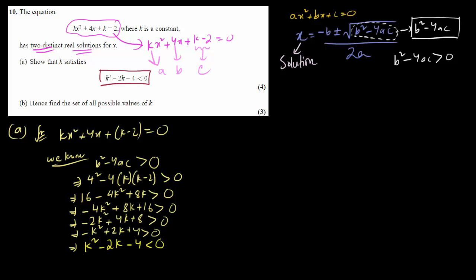Now question number B. Question number B asks us to solve this inequality. I want you to think of question B as a completely different question, approached differently - that way you will understand it better. Question B is: just solve the inequality k squared minus 2k minus 4 less than 0.